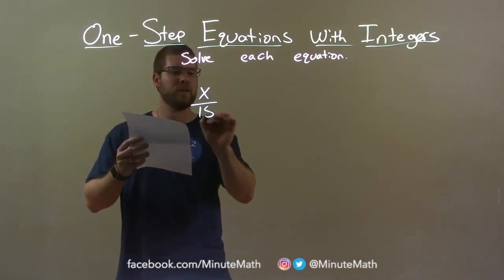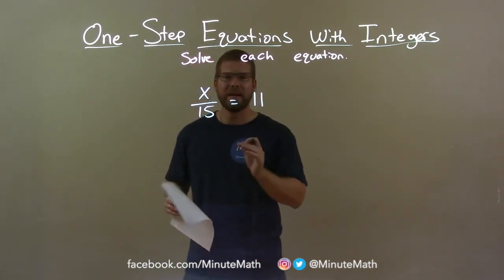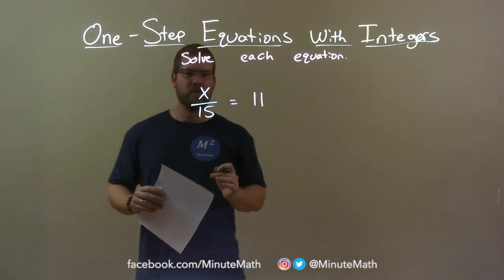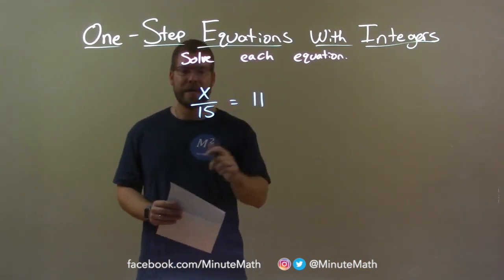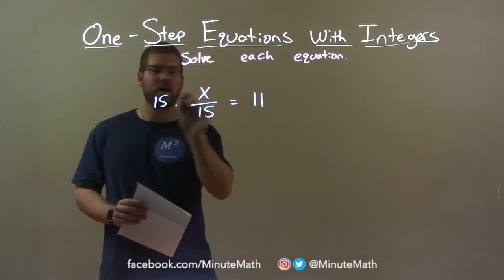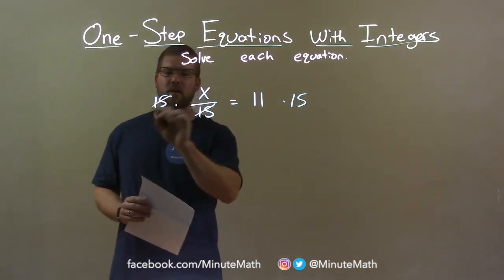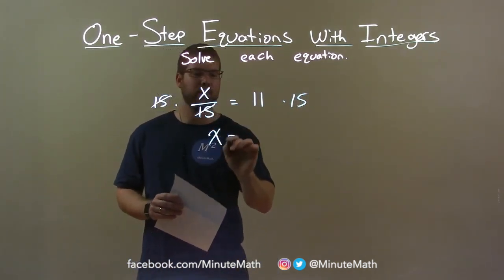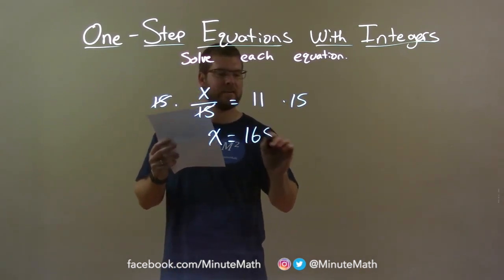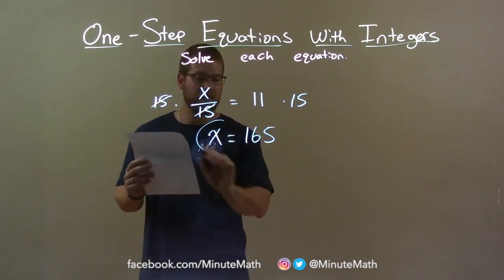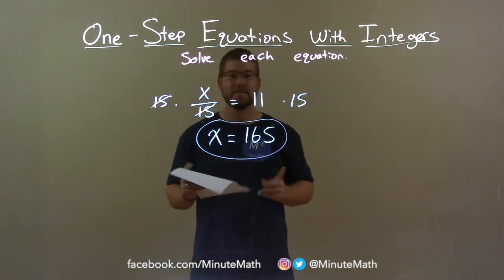x over 15 equals 11. I want to get x by itself, but it's being divided by 15. Opposite of division is multiplication. So if I multiply both sides by 15, the 15s on the left cancel, giving me x by itself. Now, 11 times 15 is 165. So the final answer is x equals 165.